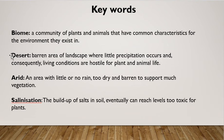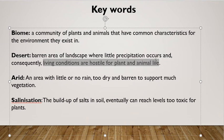A desert is a barren area of landscape where little precipitation — precipitation means rain — occurs, and consequently living conditions are hostile for plant and animal life. Deserts are often characterized as hot. During the day they're very hot, but they can also be extremely cold at nighttime — one extreme to the other. There's very little rainfall, and as a result very few plants and animals can survive here. Those that do have adapted to live in the climate.